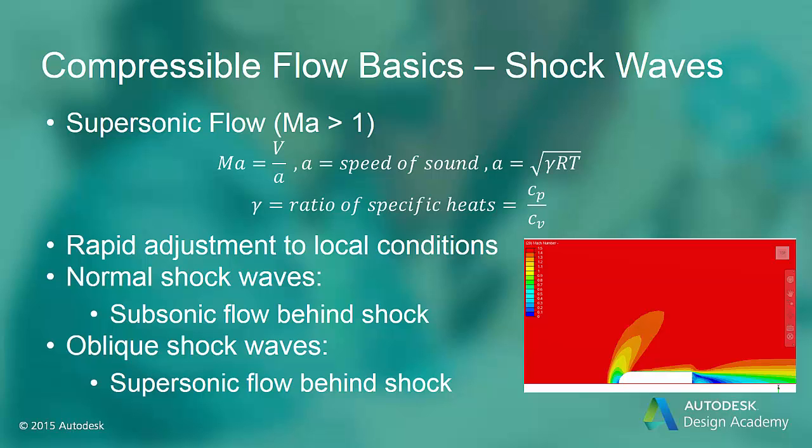If a vehicle is traveling fast enough, a normal shockwave will form just in front of the leading edge of the body, as shown in the blunt object. The normal shock will then bend into an oblique shockwave traveling away from the body. For supersonic jets, there are no normal shockwaves, only oblique shockwaves.